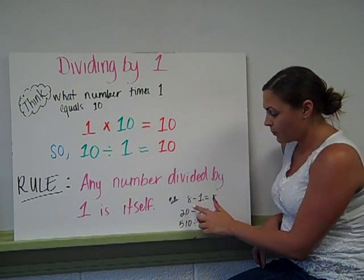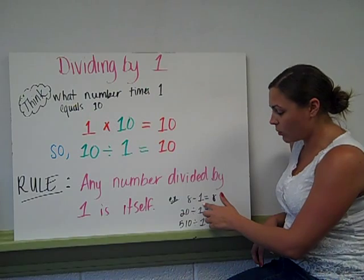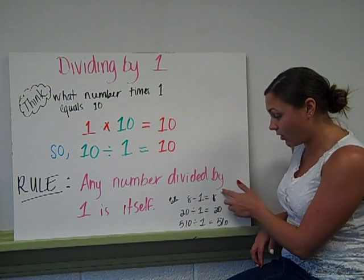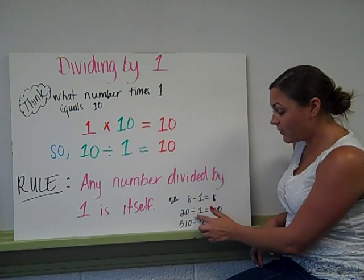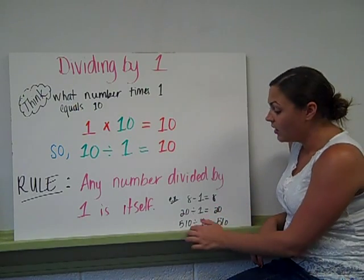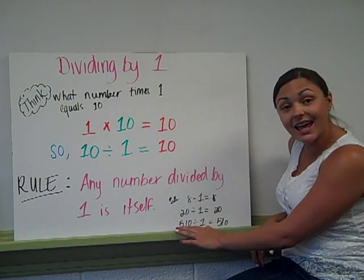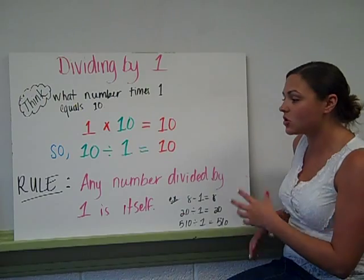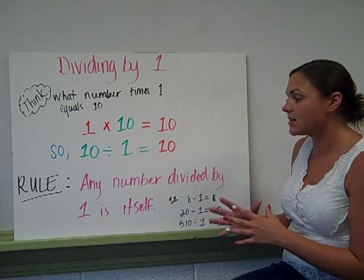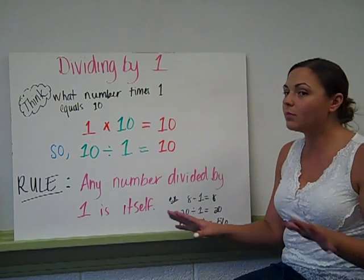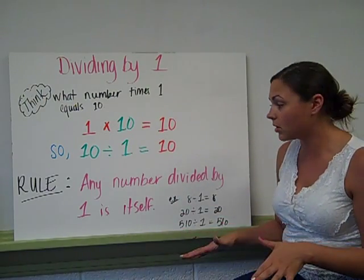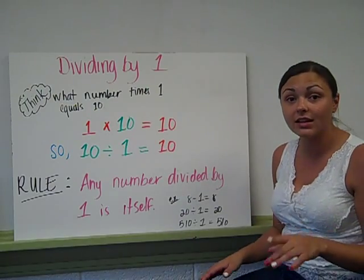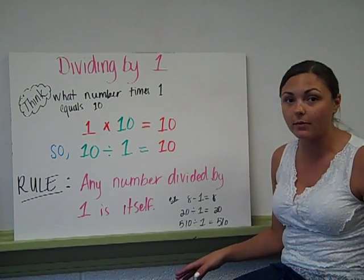I have some examples here. 8 divided by 1 is 8 — it's the same number, it's itself. 20 divided by 1 is 20. 510 divided by 1 is 510. So the rule is any whole number divided by 1 is that number, no matter what.